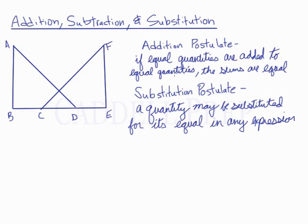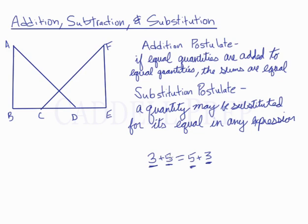Let's look at that numerically. This means that 3 plus 5 is going to equal 5 plus 3. We have equal quantities added to equal quantities, and we know that the sums of these will be the same.